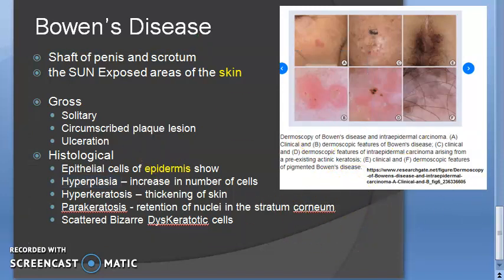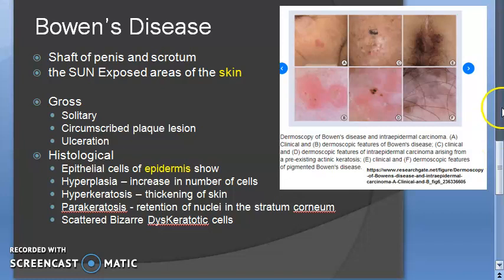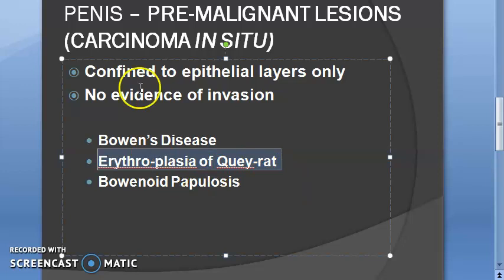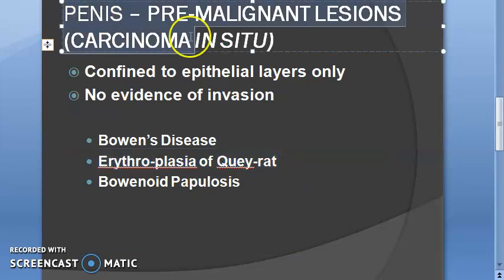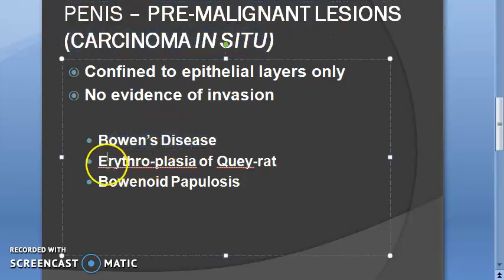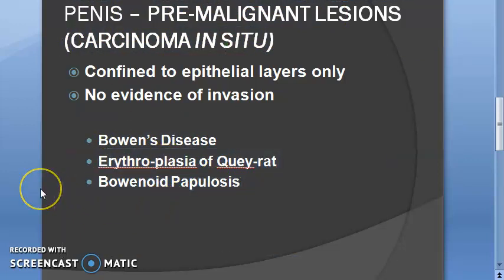That covers Bowen's disease. The next pre-malignant lesion is erythroplasia of Queyrat. We are looking at the pre-malignant carcinoma in situ lesions of the penis — Bowen's disease is done, and two more remain. We will continue in the next video.